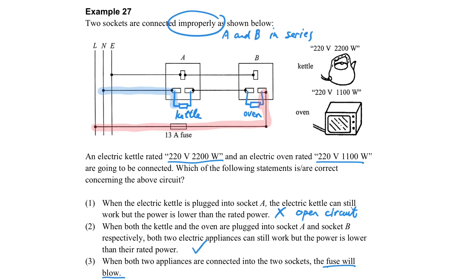Then will the fuse blow? We have to calculate. But what is the current in this case? Once again, because they are not connected in the proper way, they are not working at the rated value. That means we have to first find the resistance first.